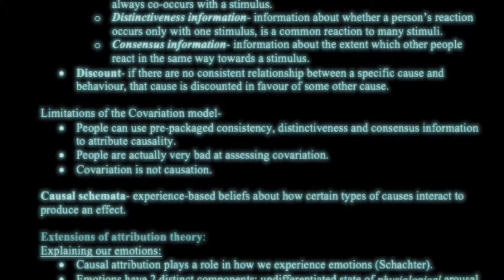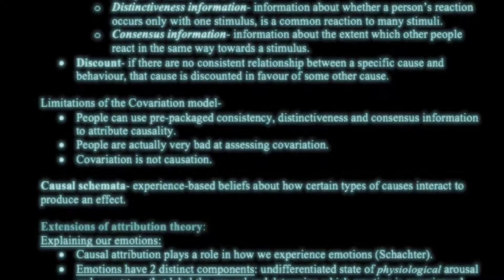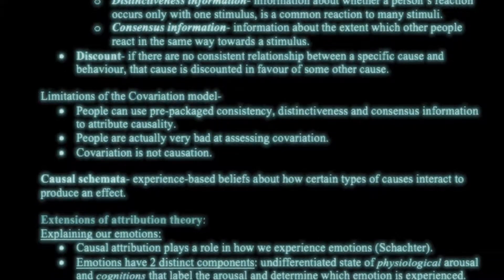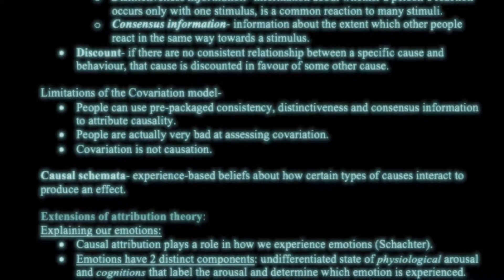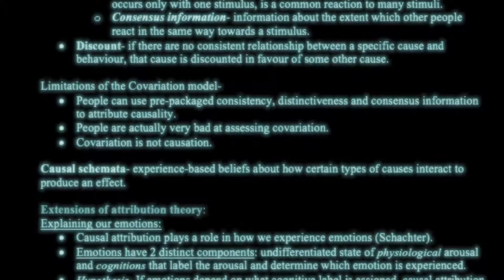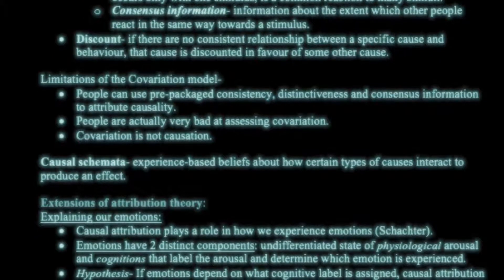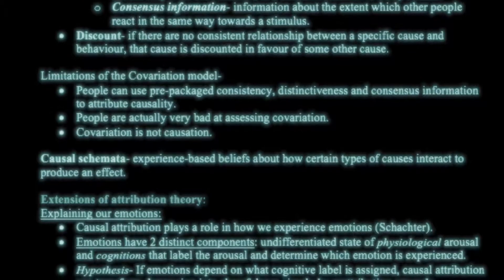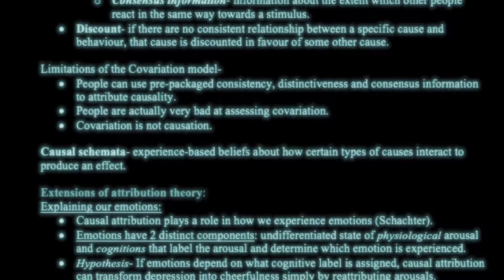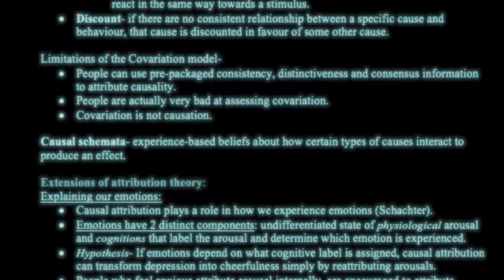There are limitations to the covariation model: people use prepackaged consistency, distinctiveness, and consensus information with their own preconceived notions, and people are actually very bad at assessing covariation. Importantly, covariation is not causation. There is also the idea of causal schemata, which are experience-based beliefs about how certain types of causes interact to produce an effect.